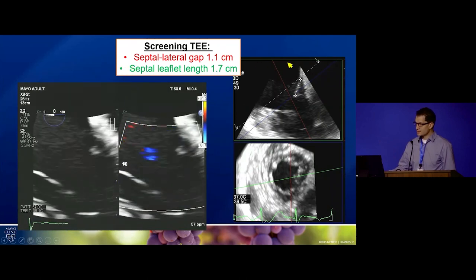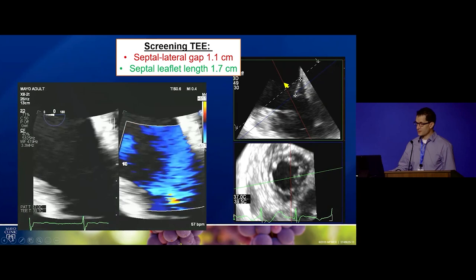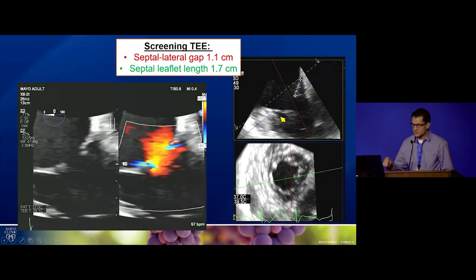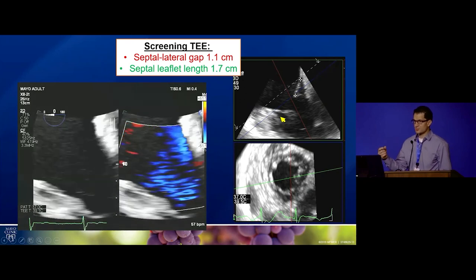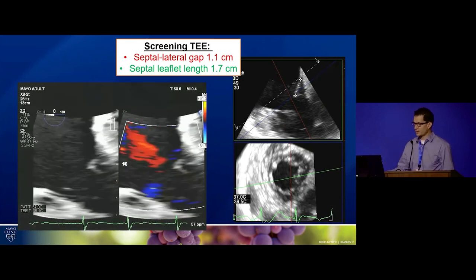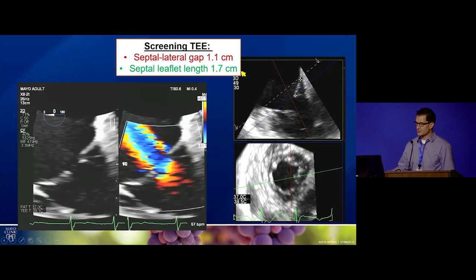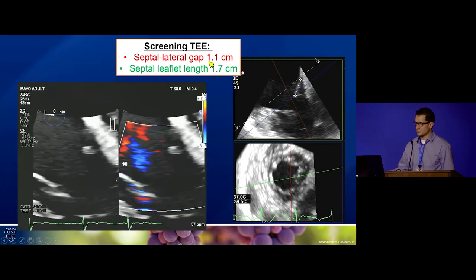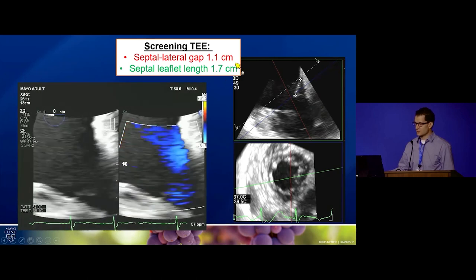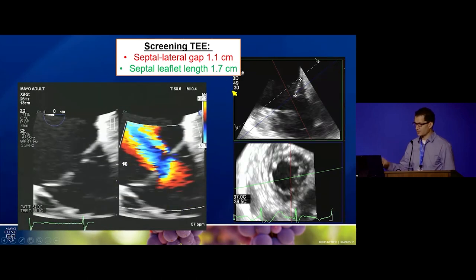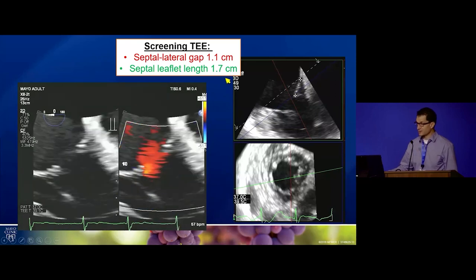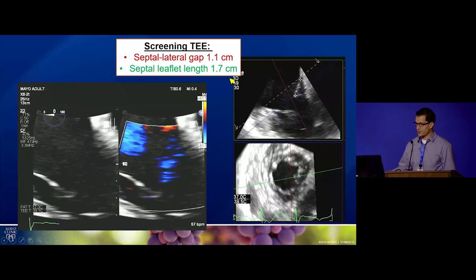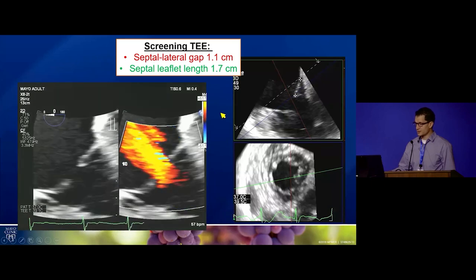Another finding in this view is the length of the septal leaflet. Some patients have a short septal leaflet, and we need about seven to nine millimeters of leaflet length inside the device depending on its size, or you risk the leaflet slipping out and leaflet detachment. This patient had a fairly long septal leaflet, which was favorable.